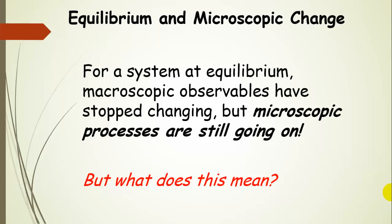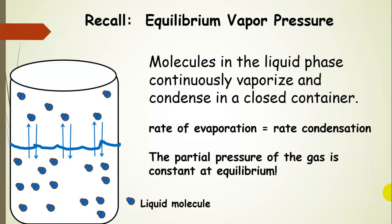We know that macroscopic observables stop changing when the system is at equilibrium, but microscopic processes are still going on. To answer what that means, let's think about equilibrium vapor pressure. We have molecules in the liquid phase that continuously vaporize and condense in a closed container — liquid water molecules and gaseous molecules continuously vaporizing and condensing. The equilibrium vapor pressure stays constant, meaning the system is at equilibrium. The rate of evaporation equals the rate of condensation in this closed system.